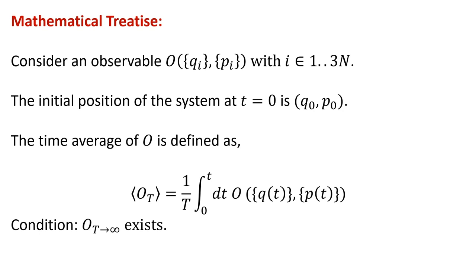Let us go over the mathematical treatment. Consider an observable which is a function of the generalized coordinates and generalized momenta, each taking 3N values in three dimensions for N particles. At t equal to 0, the phase space coordinates are given by q0 and p0, some initial values. We define the time average of this observable O as one over T, the integral from 0 to T of the observable integrated over all times.